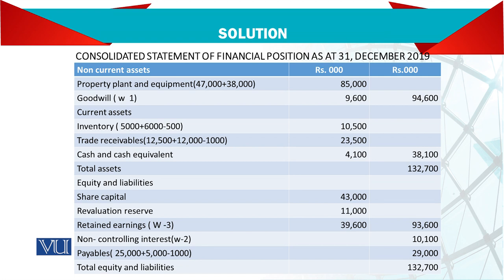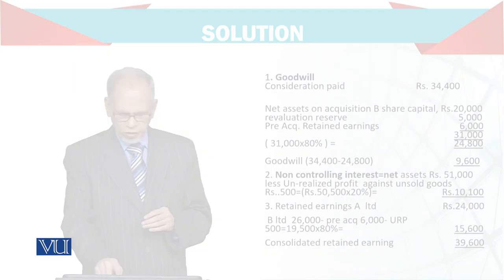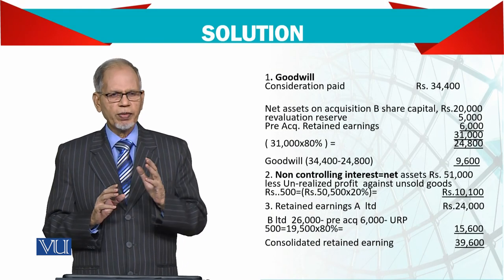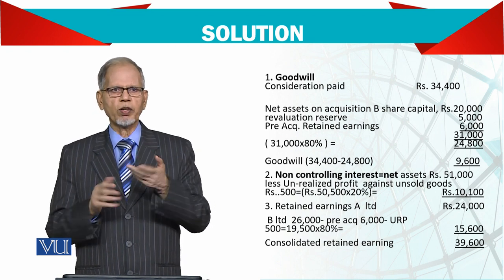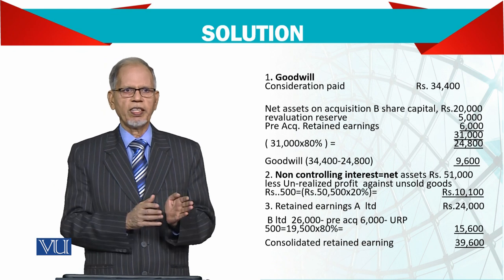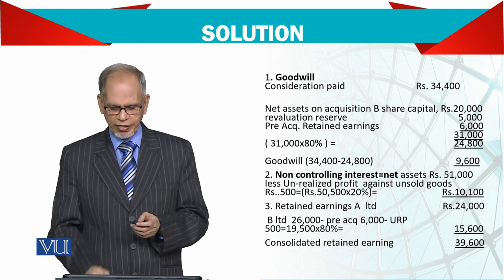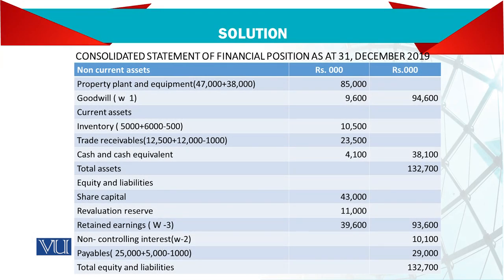For cash and cash equivalents, there is no adjustment since there is no dividend or cash in transit, so no problem. Total assets are thus determined. For share capital, only the holding company's figure comes through. For revaluation reserve, it comes as-is, but with one adjustment: the pre-acquisition revaluation reserve is removed in the goodwill calculation, and the remaining balance is combined with A's revaluation reserve in the balance sheet, leaving 11,000.